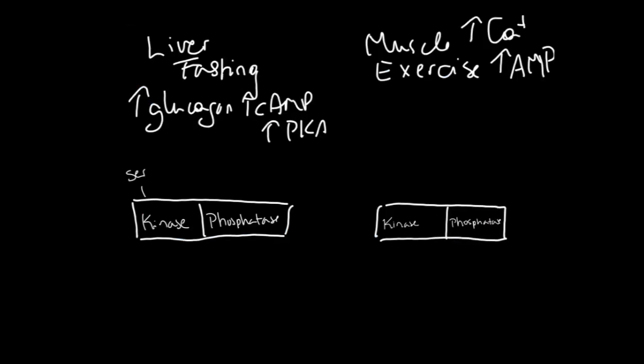What I've got drawn right here is just PFK2. As I said, it's a bifunctional enzyme. It has a kinase domain and a phosphatase domain. Whatever domain is phosphorylated is inhibited.